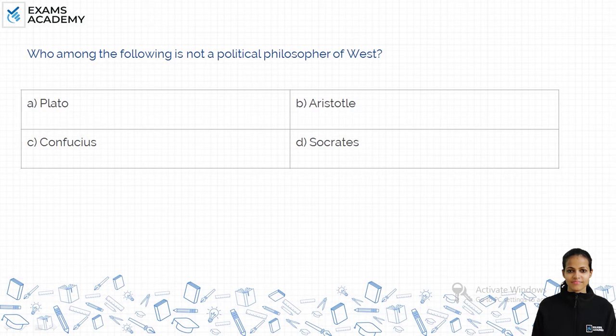Hello friends, here is another question for today. Who among the following is not a political philosopher of West? Your options are: A) Plato, B) Aristotle, C) Confucius, or D) Socrates.